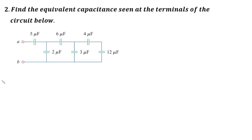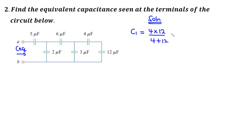Moving to the second question, we want to find the equivalent capacitance seen at the terminals of this circuit between terminals A and B. The 4 microfarad and 12 microfarad capacitors are connected in series, so C1 equals 4 times 12 divided by 4 plus 12, which is 48 divided by 16 = 3 microfarads.